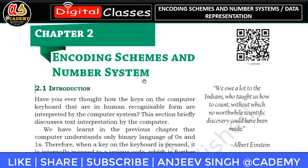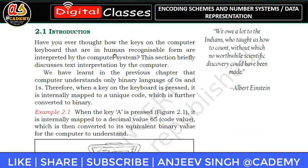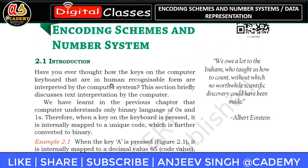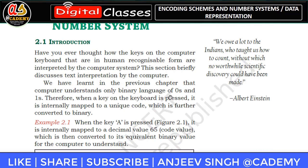As you all know, a computer is a machine which is able to understand only digital language — it cannot understand any other language. People are able to understand normal languages like English and Hindi, whereas a computer understands only zeros and ones. So how does communication happen between humans and computers?